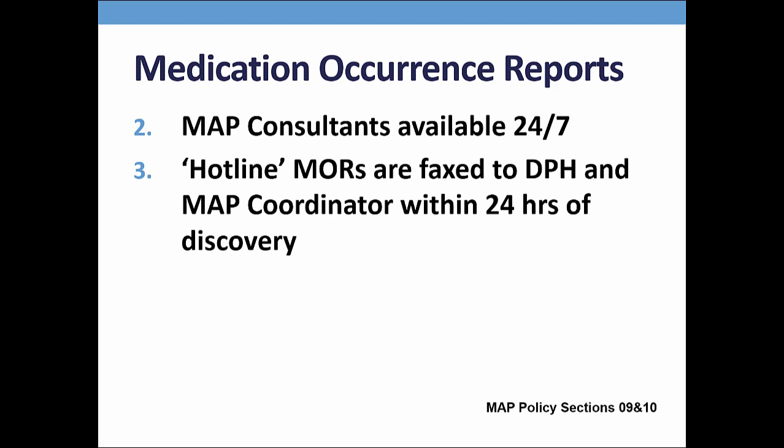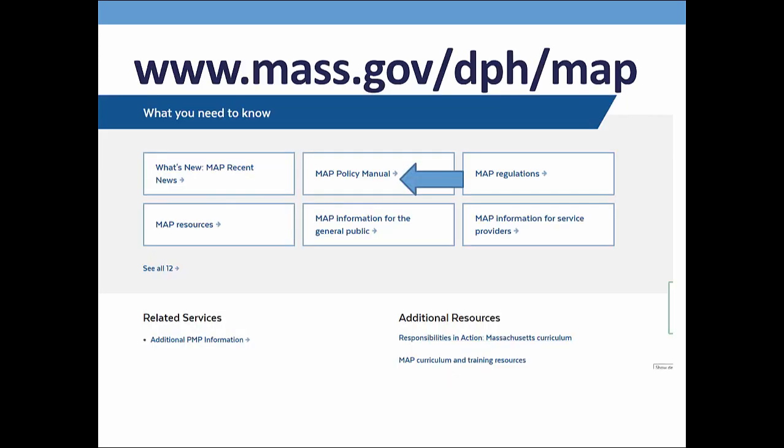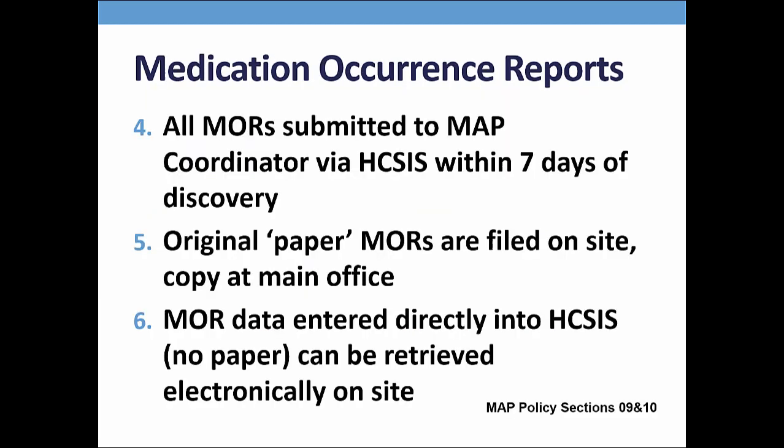A hotline MOR is when medical intervention, illness, injury, or death follow a med occurrence. If you realize the med occurrence is a hotline, a DPH form must be completed and faxed to the DPH clinical reviewer and your MAP coordinator within 24 hours of discovery. This is the DPH MOR form which is required only for hotlines; if you are ever required to complete one, it can be found in the MAP policy manual or online. I will ask to see all original MORs — most supervisors use a three-ring binder — and originals must be on site. All med occurrences are submitted electronically to your DDS MAP coordinator via the Home and Community Services Information System, also known as HCSS. If the individual or the site address is not in the system, you must contact the HCSS customer service to have the information added. In the meantime, fax the MOR to your regional MAP coordinator.